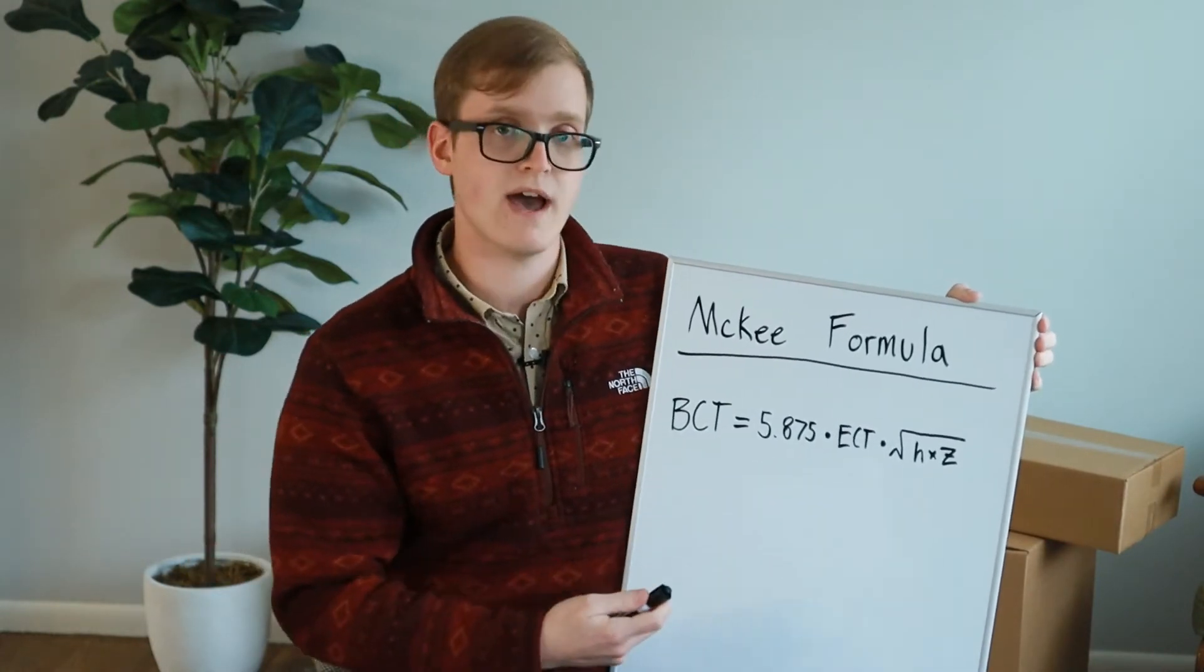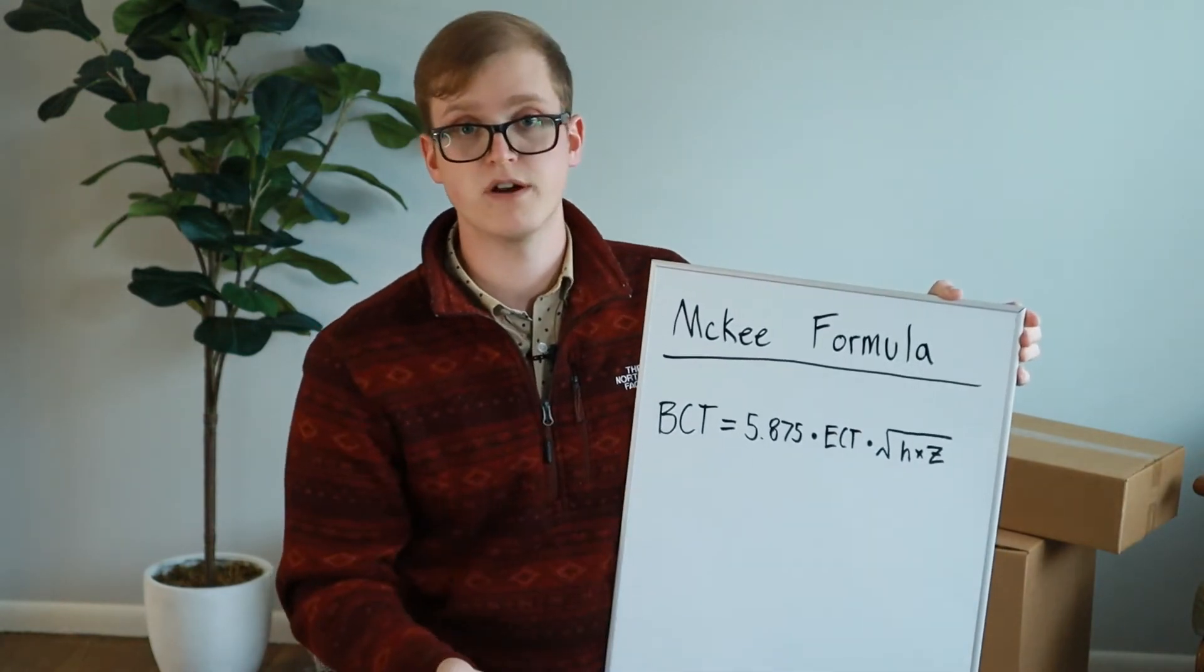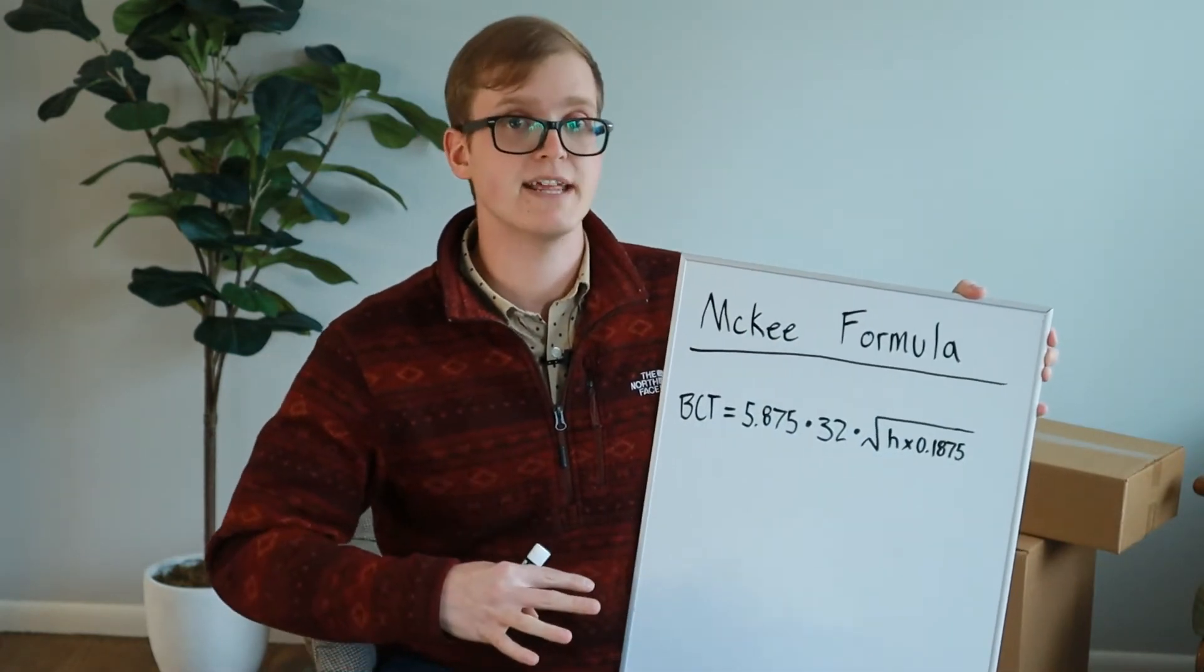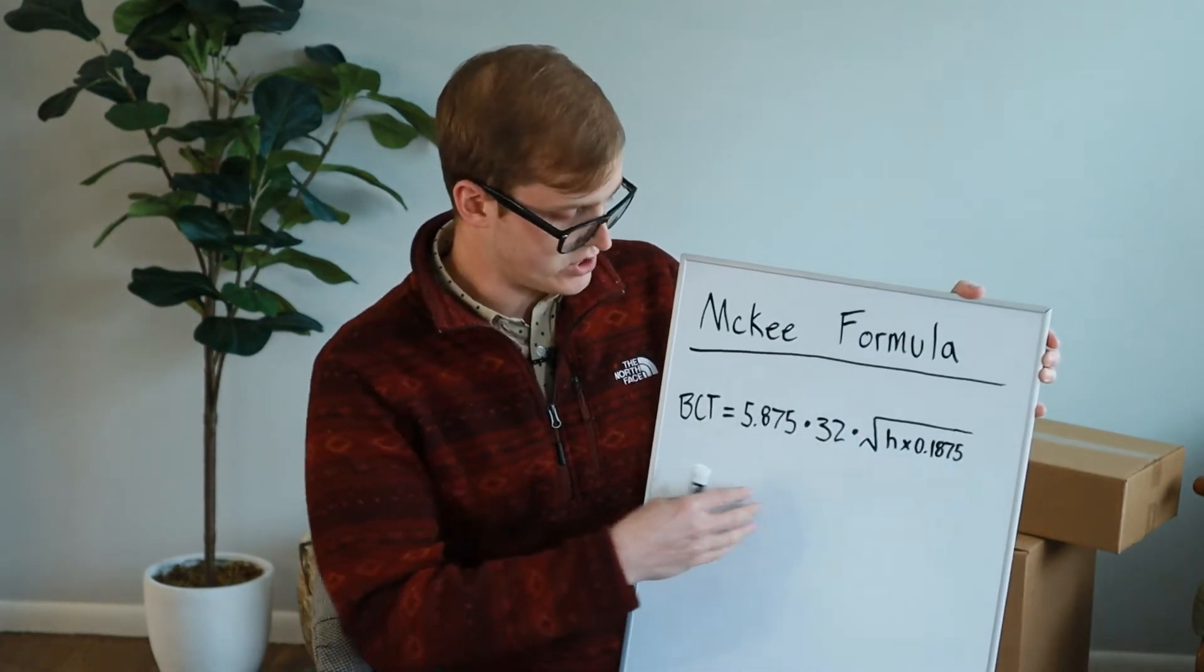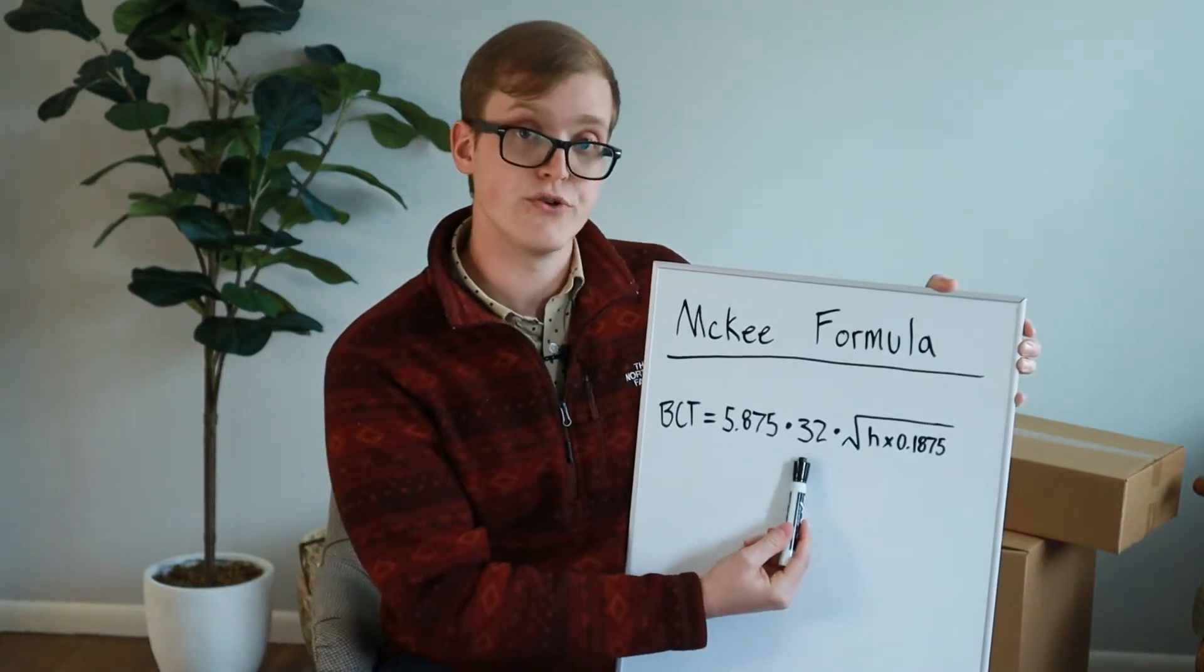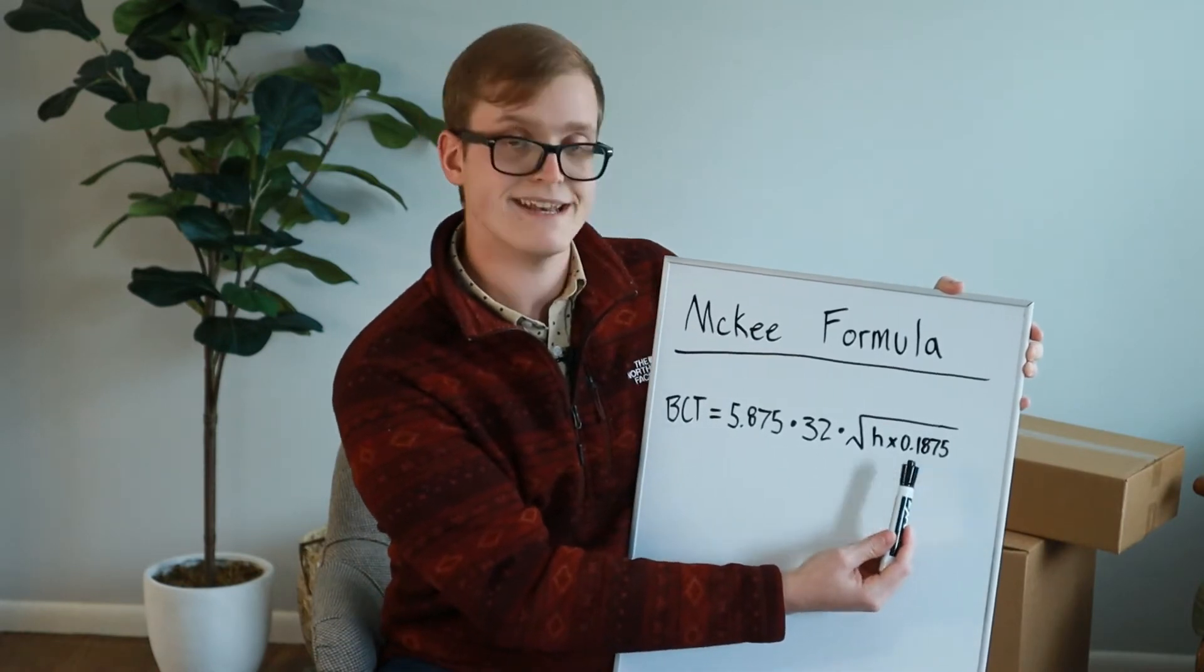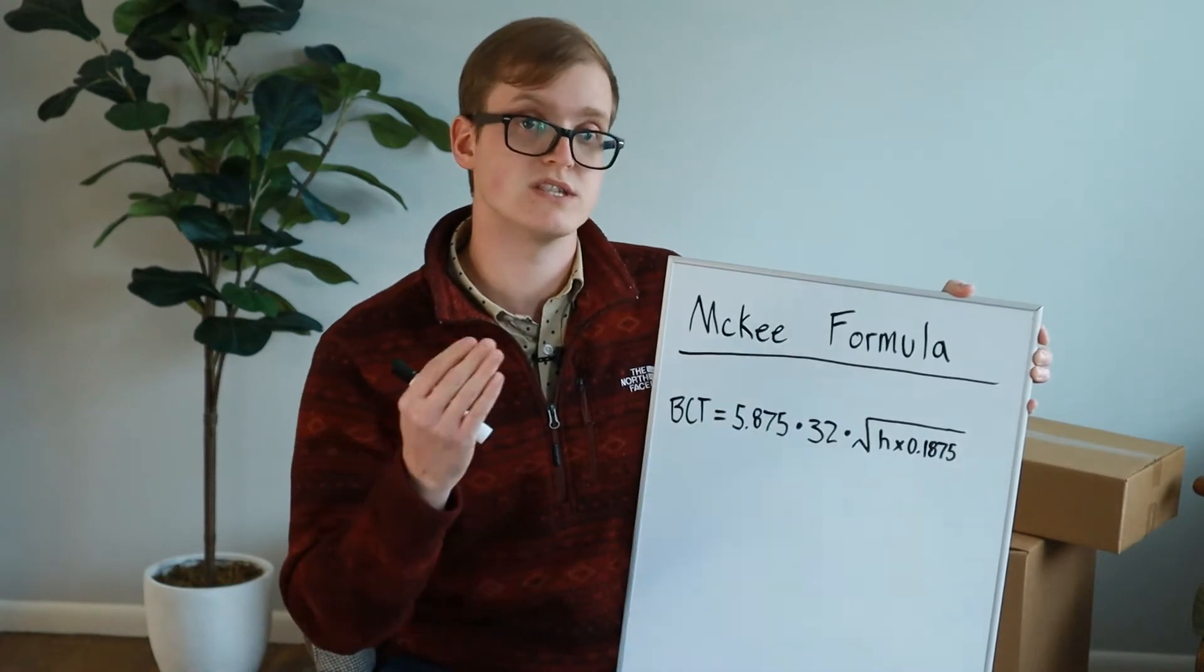Let's write it out that way so that it's easier. And all we have to find is H, which is the perimeter of our box. Now that we wrote it out and kind of simplified it, now we're only looking for H on this side of the equation to then find our box compression test and our strength. So we, again, we added 32, which is our ECT value. And then we added 0.1875, which is the thickness of our board, which is C-flute.